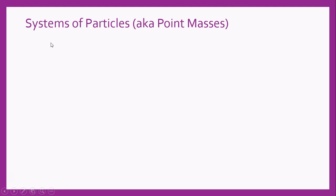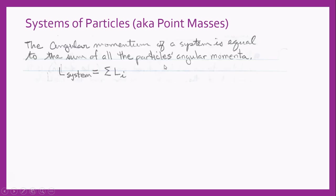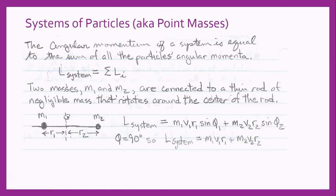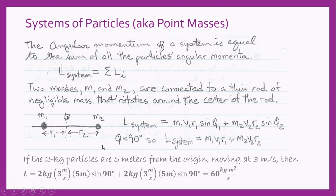Let's look at a system of rotating particles. The angular momentum of this system is equal to the sum of all the particles' angular momenta. We have two masses connected to a thin rod of negligible mass rotating around the center of the rod. The angular momentum of the system is simply the sum of the two particles' angular momenta, and because phi is 90 degrees, we can simplify it further.